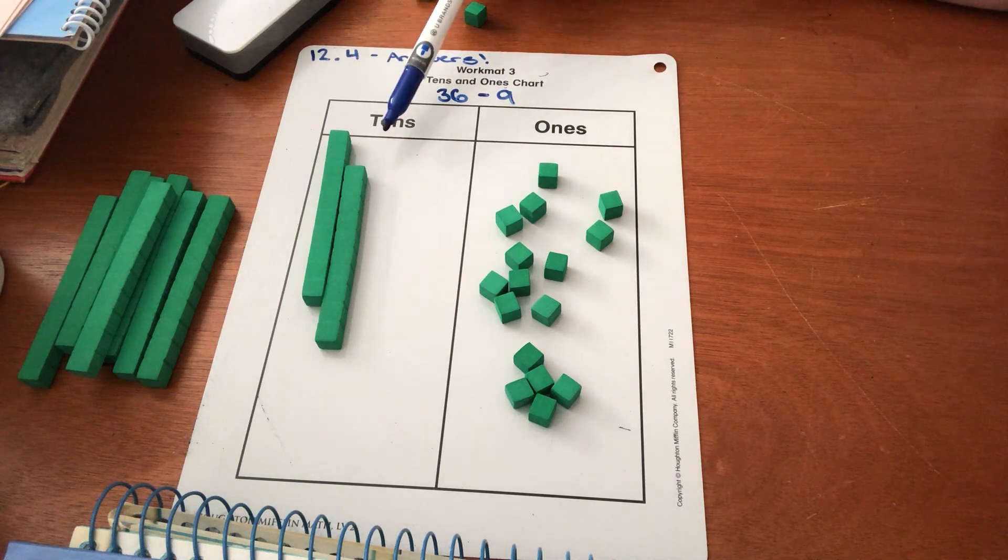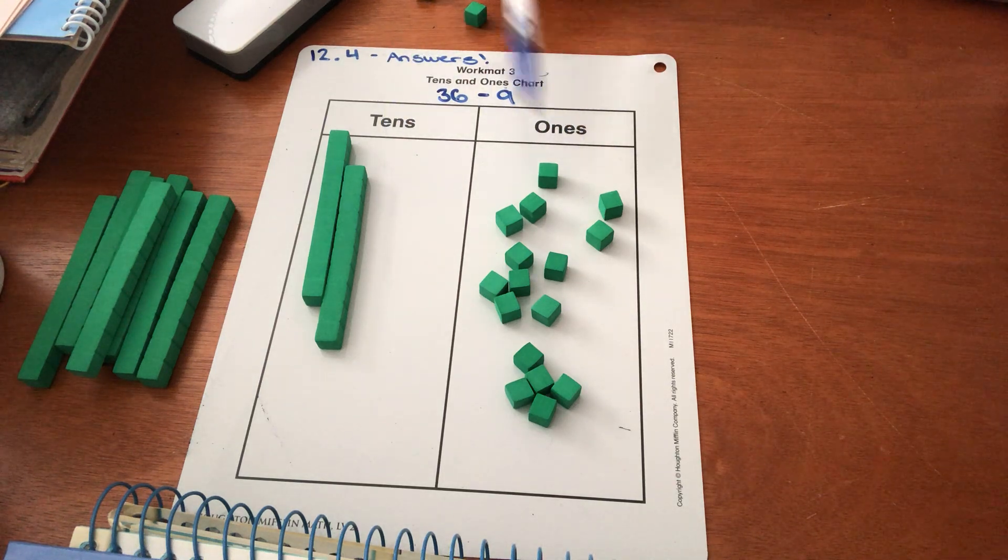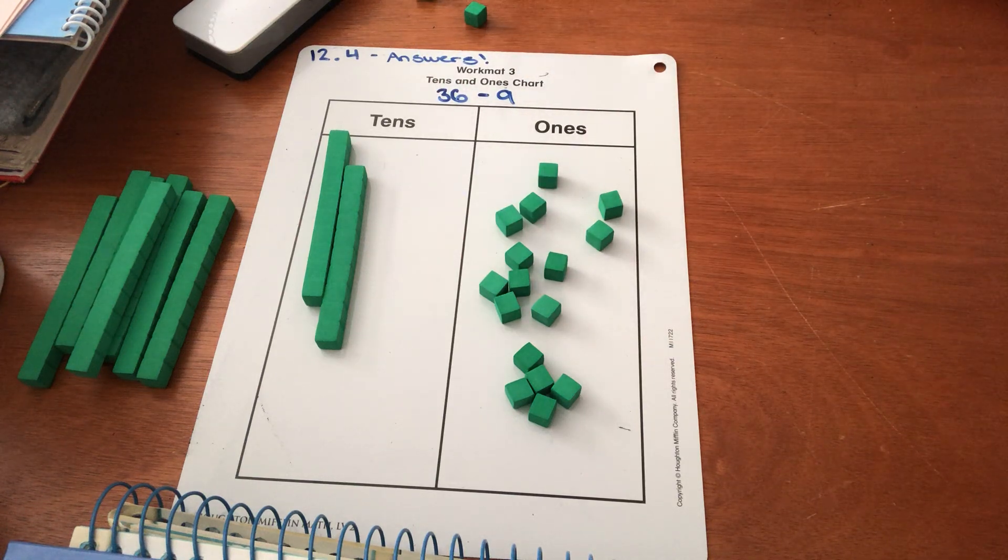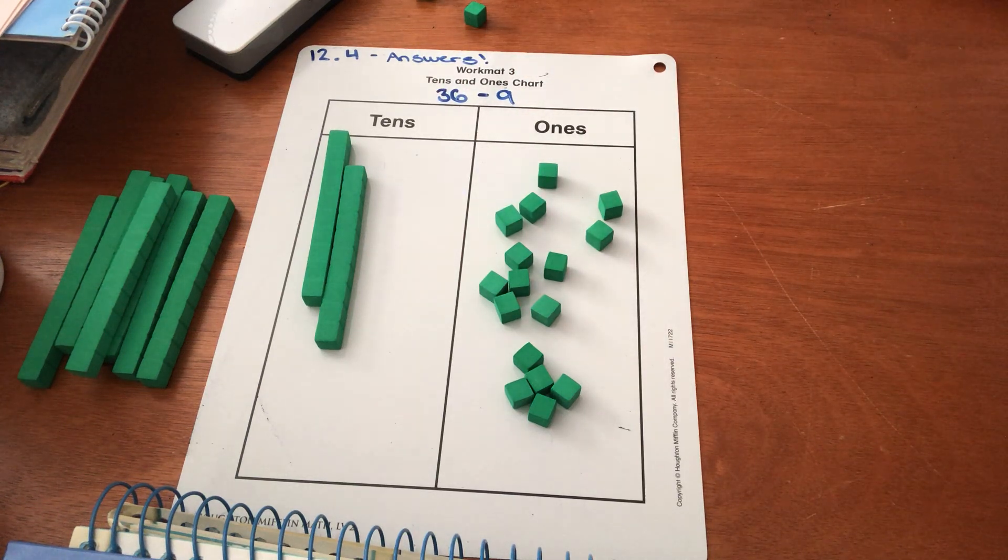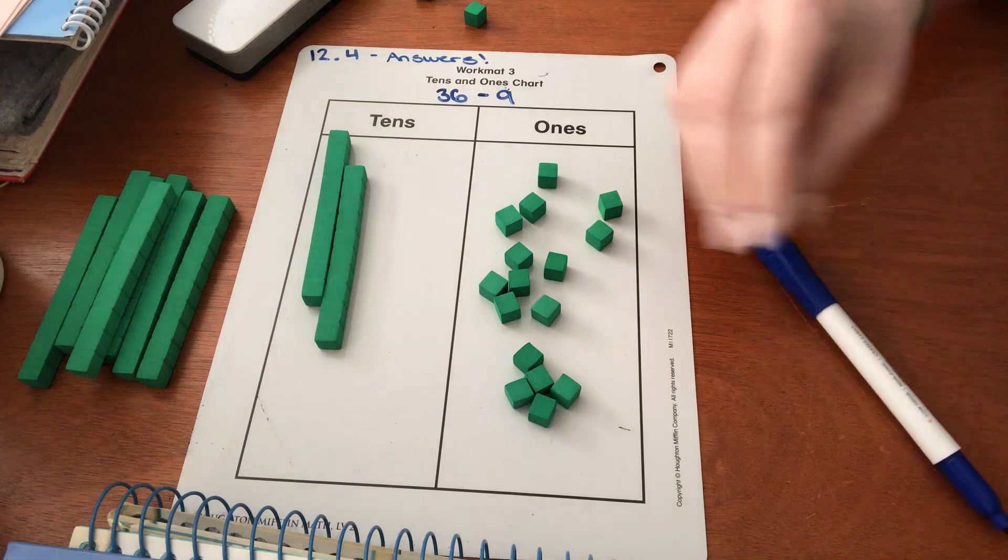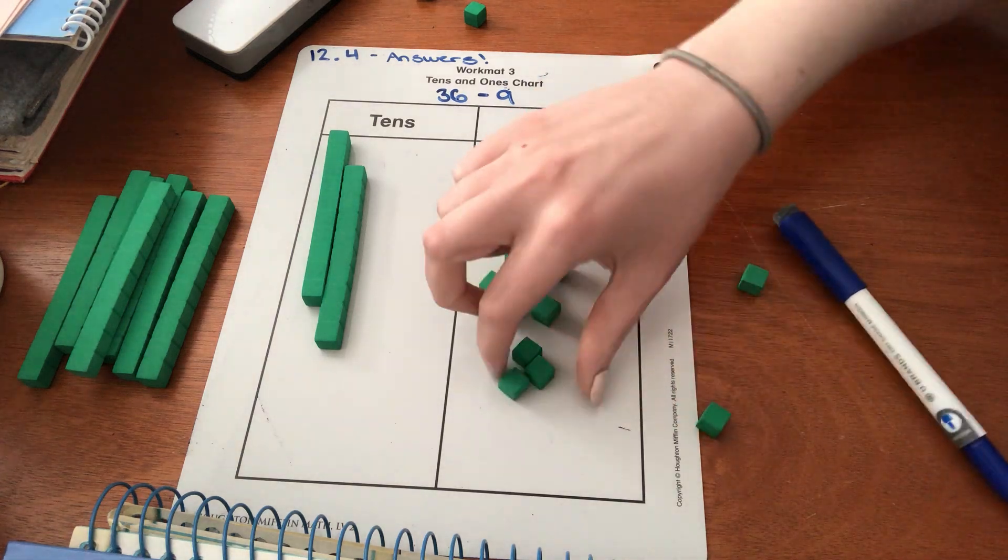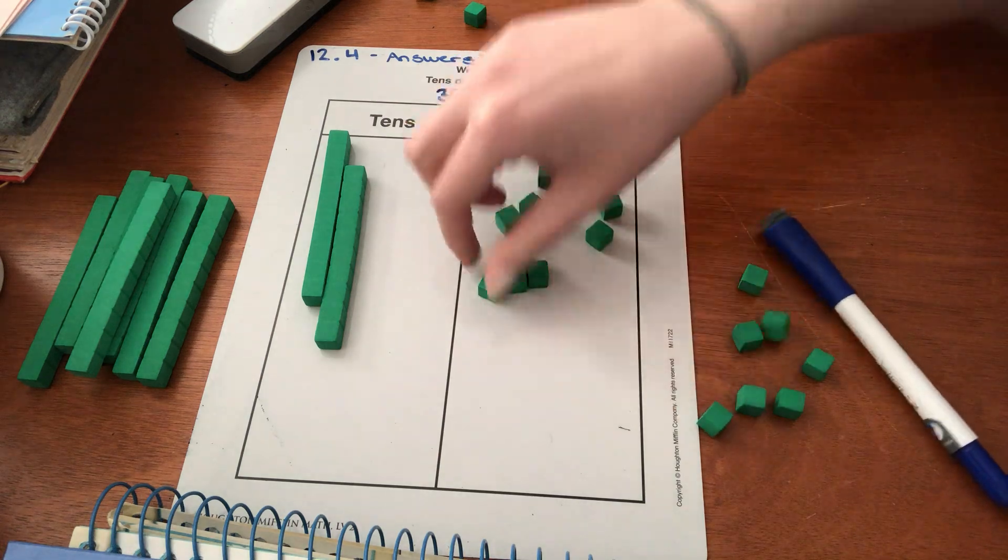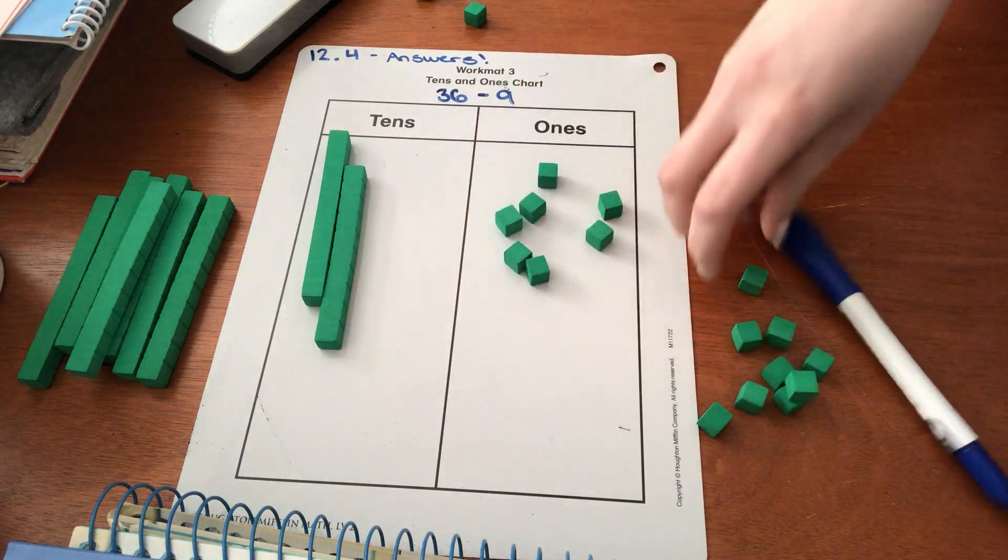So now I have two tens and 16 ones. I still have 36 altogether here. Now we're on column number three. Subtract the ones. So I need to take away 9 from my ones place. One, two, three, four, five, six, seven, eight, nine.